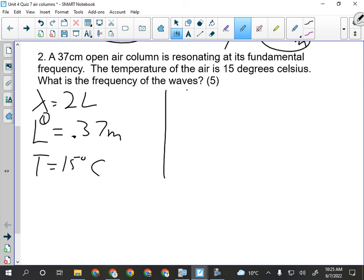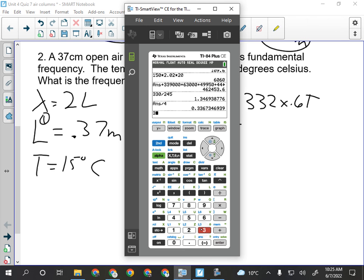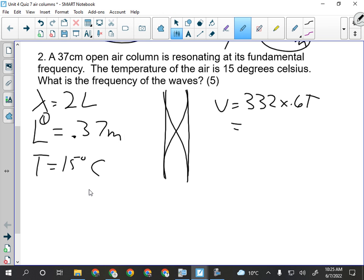An open air column at its fundamental frequency looks like this. We have half a wavelength in the tube. Right now, we need to calculate the speed using 332 plus 0.6 times time. So getting speed 332 plus 0.6 times 15, we are looking at 341 meters per second. Give them a mark for calculating the speed.